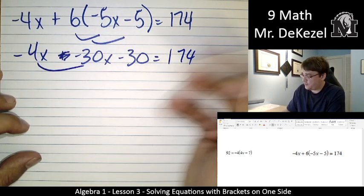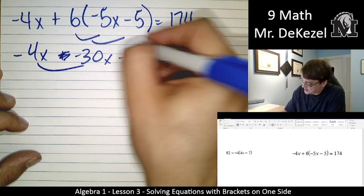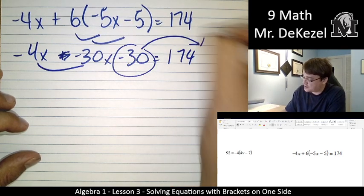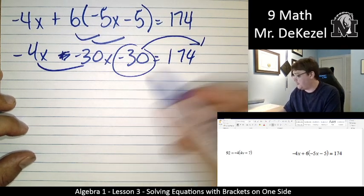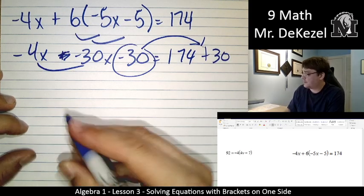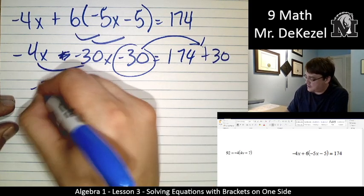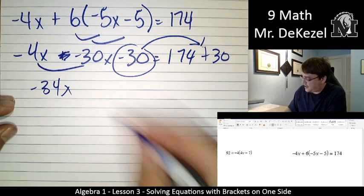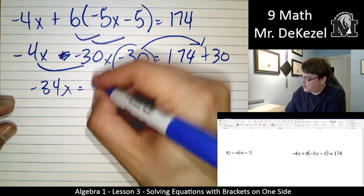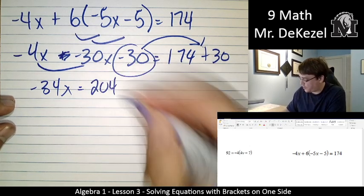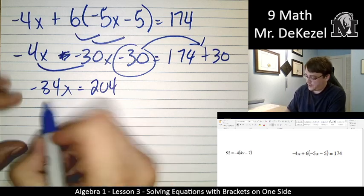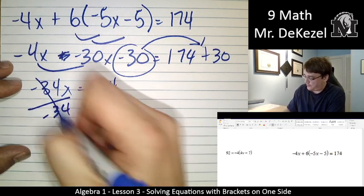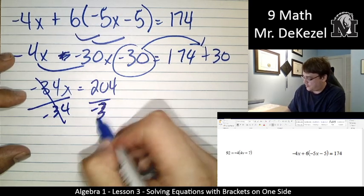We're going to combine these two like terms. And we're going to take this minus 30, and we're going to move it across the equal sign. It's going to become plus 30 on the other side. So this is minus 34x is equal to 204. We're going to divide both sides by minus 34.